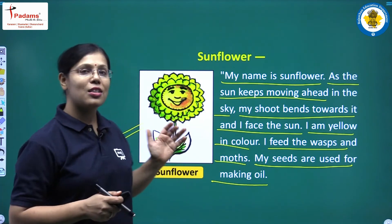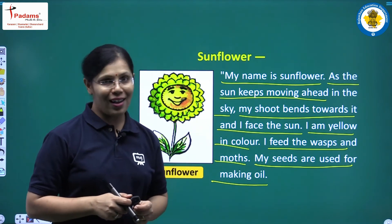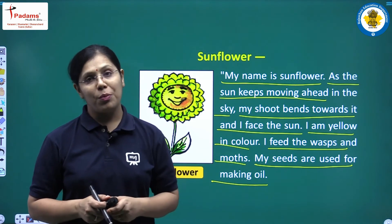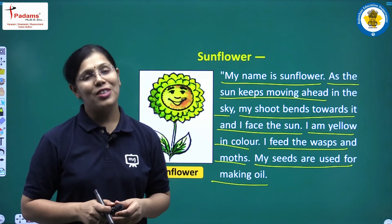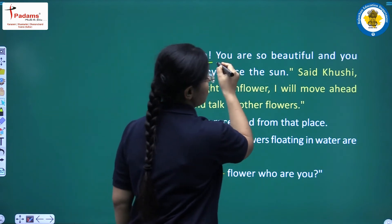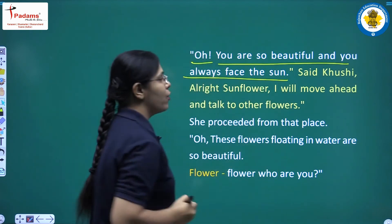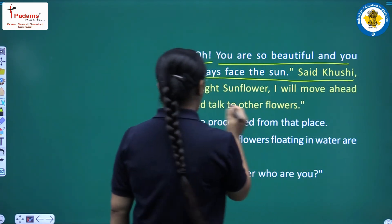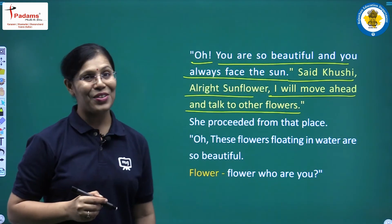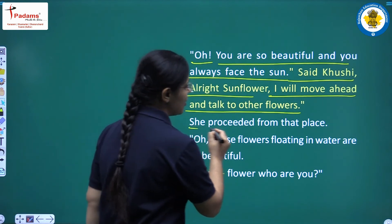This is a very interesting fact, students — the sunflower is the flower whose shoot bends towards sunlight, and it is yellow in colour. The seeds of sunflower are also used for making oil. Khushi said to the sunflower: 'You are so beautiful and you always face the sun. Sunflower, I will move ahead and talk to other flowers.' She then proceeded from that place.